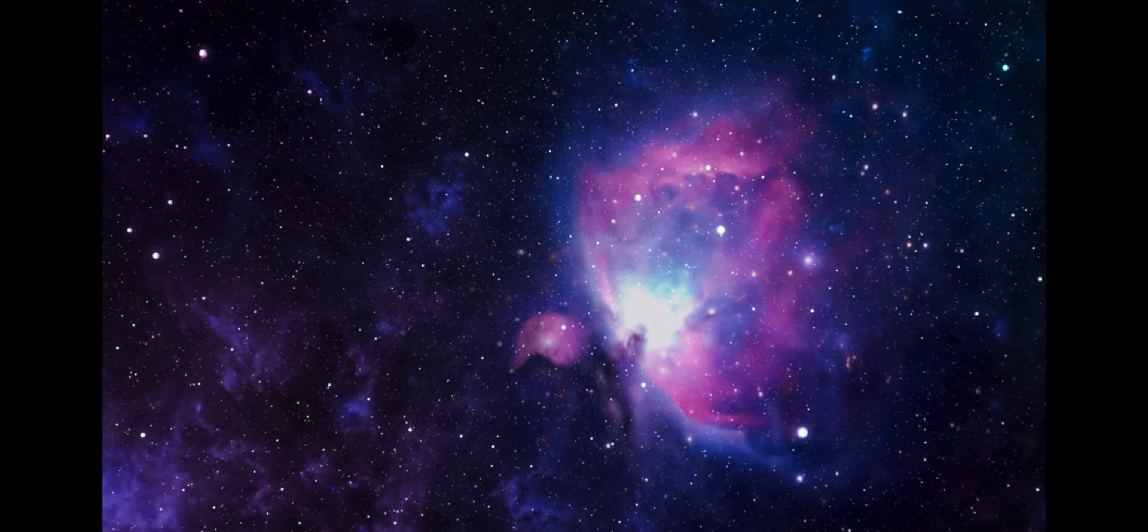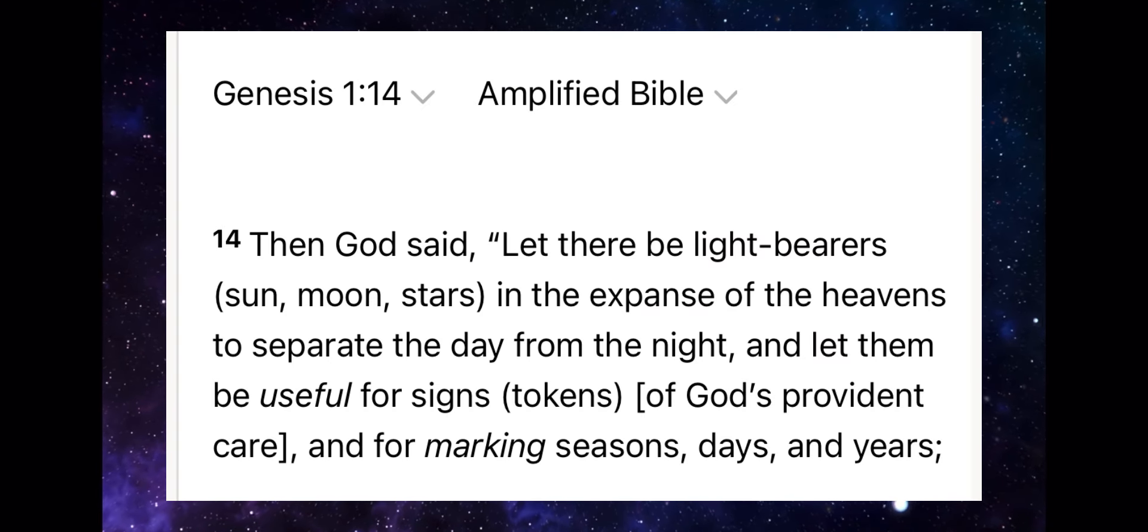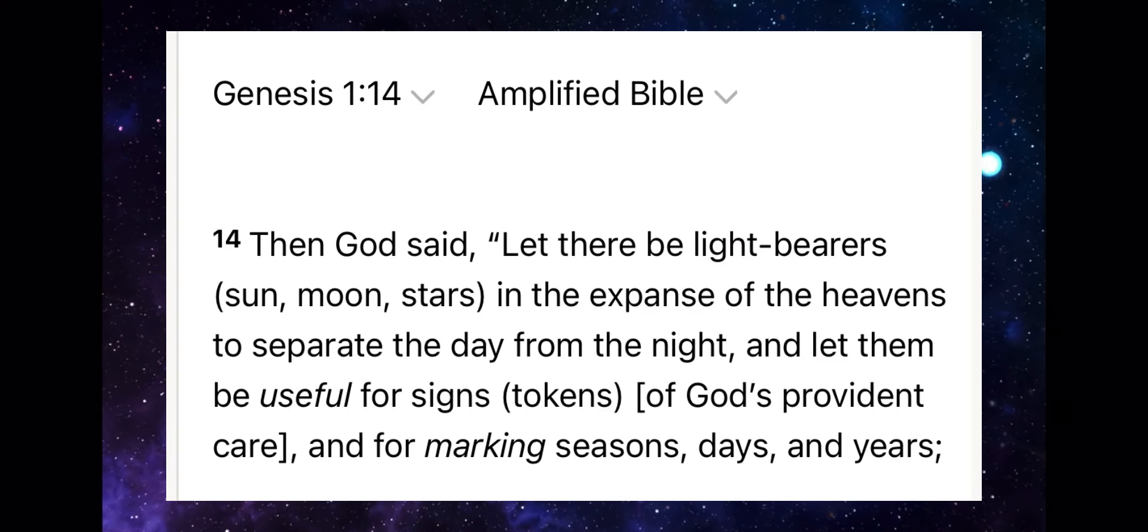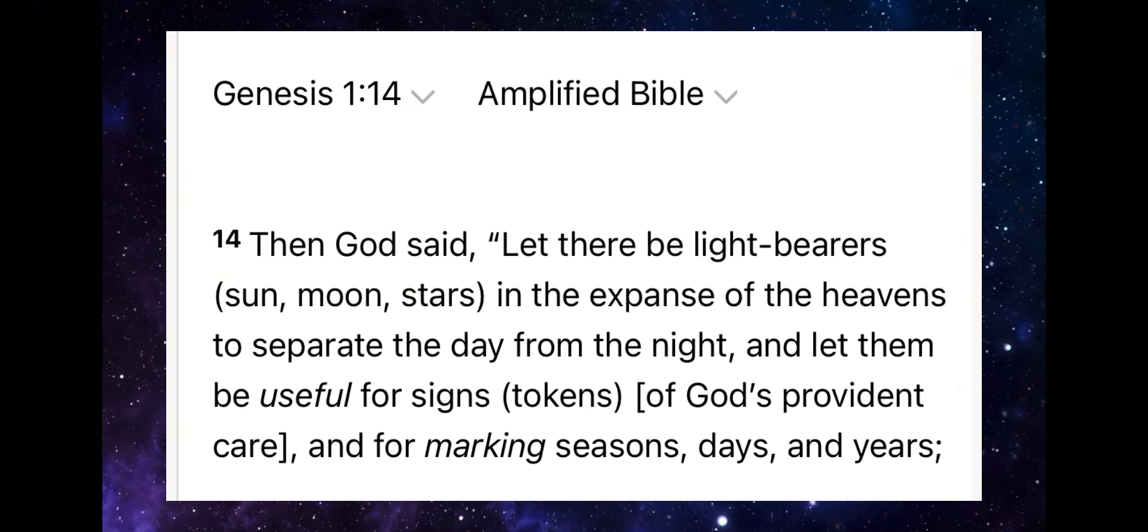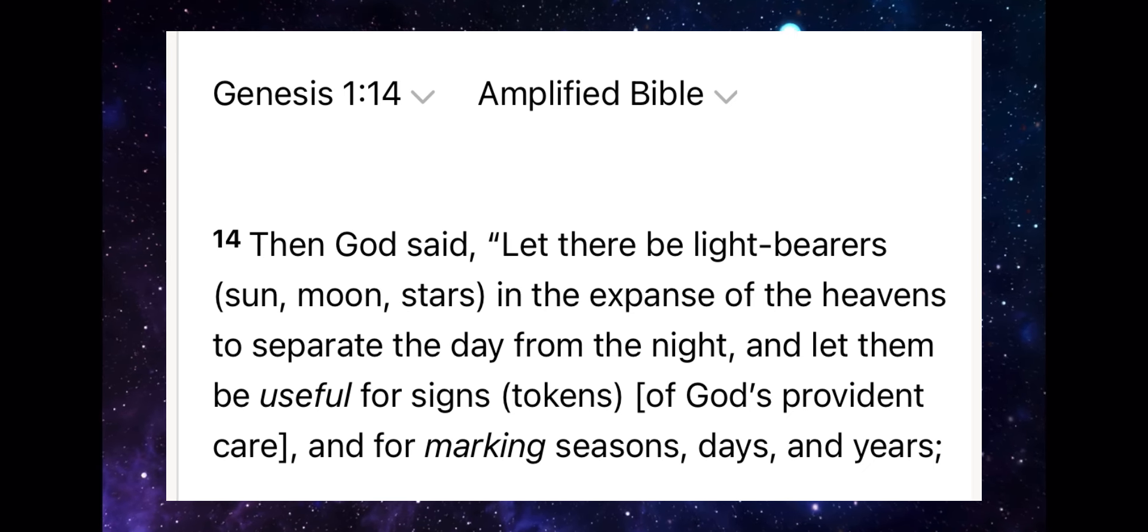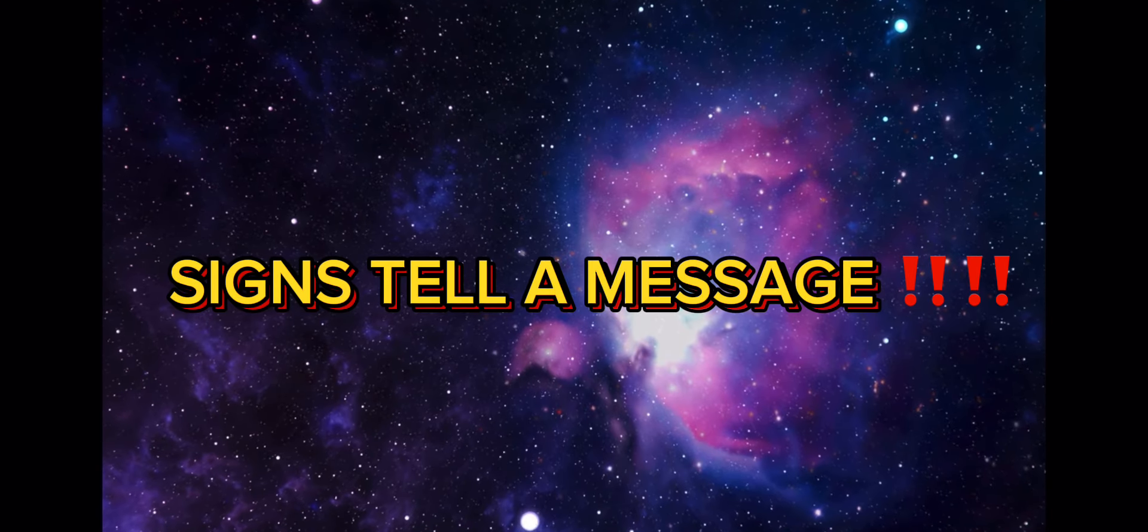Now in your Bible, you see in Genesis 1:14 how God made the stars, the sun and the moon, and how the sun, moon and stars are for tokens. They are for signs. Signs tell a message, people of God.